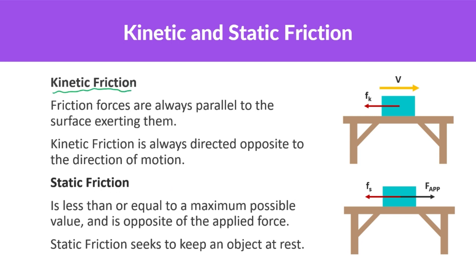Static friction is less than or equal to a maximum possible value and is opposite to the applied force — it seeks to keep an object at rest. So if I push on a block with one newton of force and it doesn't move, the force of static friction is also one newton. If I push with two newtons, static friction equals two newtons. It matches whatever applied force is trying to get it to move, up to a maximum. Say the maximum is 4.3 newtons — it'll match up until 4.3. If I push with five newtons, it won't match; instead it becomes kinetic friction, maybe 3.6 newtons. So static friction matches up to its maximum, then transitions to kinetic friction once the object starts moving.